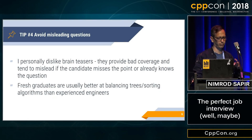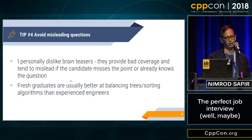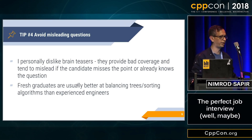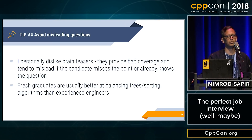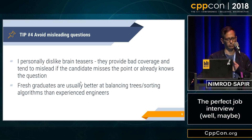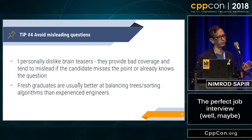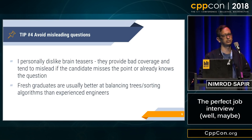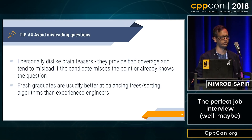My fourth tip is to avoid misleading questions. I don't like brain teasers — they provide bad coverage and tend to mislead. Maybe the candidate doesn't understand the question, or maybe they already know it. I can't ask a hundred of them to get good coverage, so I try to avoid them altogether. I also personally don't like questions about balancing trees or sorting algorithms. Those are things you learn at university, and a fresh graduate will likely answer them better than an experienced engineer. I want questions where experience gives an edge.